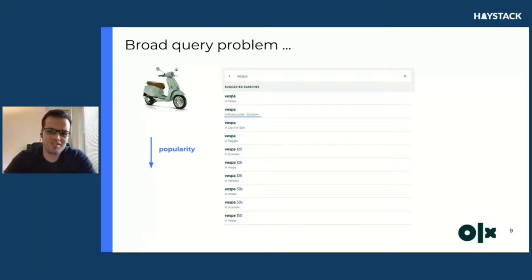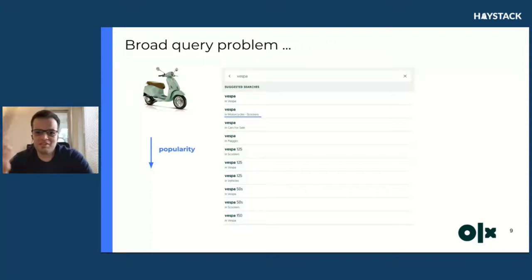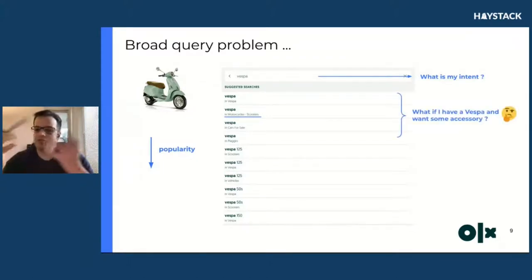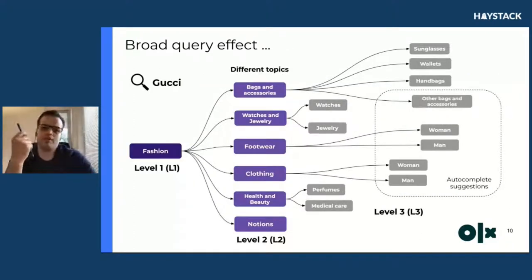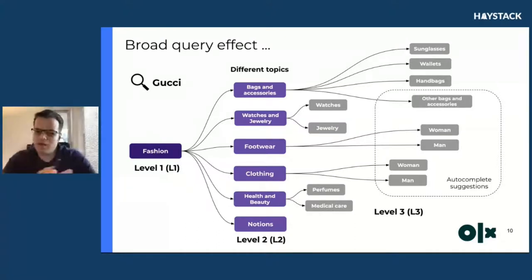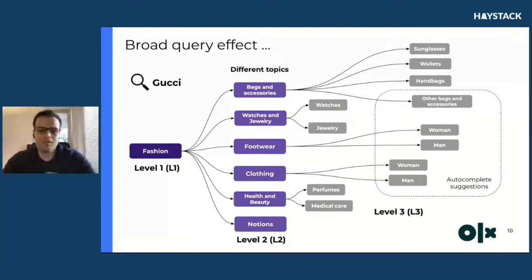But we have the traditional broad query problem. Let's say someone thinks about a Vespa — a scooter, a motorcycle. What is the user's intent when they type this? What if they have a Vespa and want an accessory like a helmet? What if they don't know anything about Vespa models — are they ready to click on a specific model? Another broad query example: a user searches for Gucci, a fashion brand. It's very common in autocomplete — we receive requests for brands. If I get all results returned when typing Gucci on OLX and look at the categories...